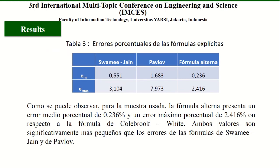As a result, the percentage errors of the explicit formulas are presented. The Alternative Formula shows a median percentage error of 0.226% and a maximum percentage error of 2.416% with respect to the Colebrook-White formula. Both values are significantly smaller than the errors of the Swamee-Jain and Pavlov formulas.